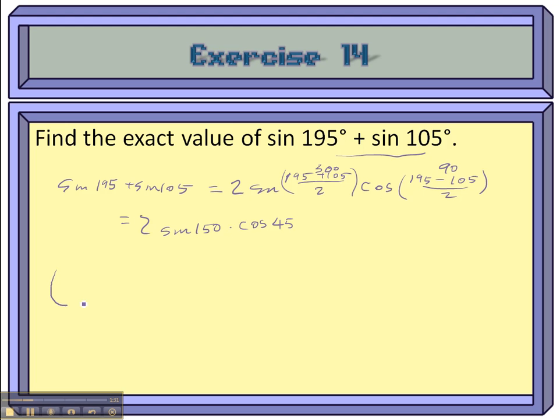So let's draw ourselves a unit circle, help remember what the sine of 105, or 150 is. That's this one right here. So it's one half. So this equals two times one half, and the cosine of 45, those are easy, root two over two. Two and a half cancel, so I just get root two over two. And I'm done.